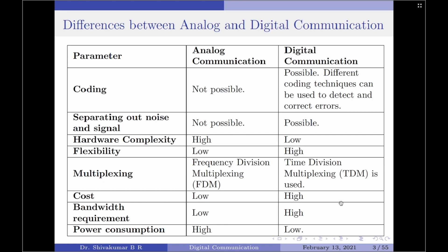The next parameter is bandwidth requirement. Analog communication systems require low bandwidth, whereas digital communication systems require very high bandwidth. Next we have power consumption as a parameter — analog communication systems consume high power.